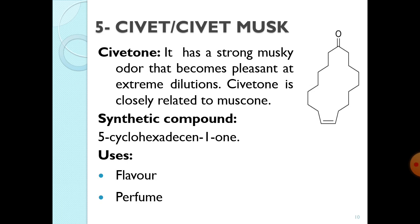Civet is now replaced by a synthetic compound because it is very difficult to obtain and its yield is very low. The synthetic compound is 5-cyclohexadecen-1-one, which is very easily prepared and is used in place of civet musk. The uses of civet are as a flavour and perfume. Thank you so much.